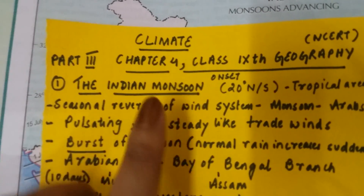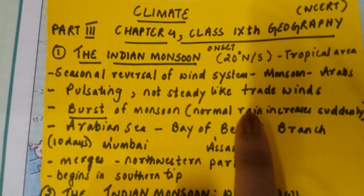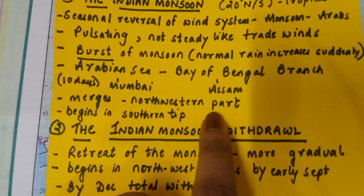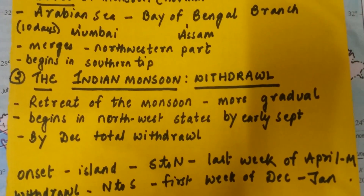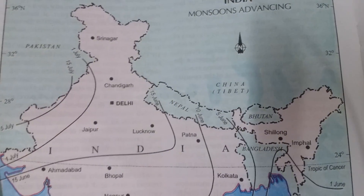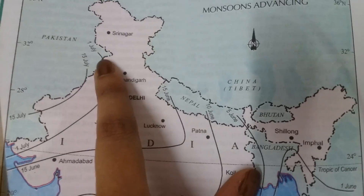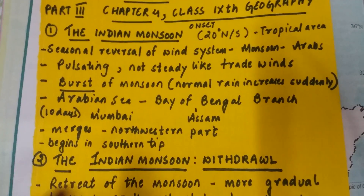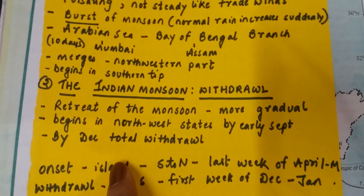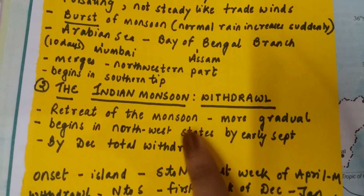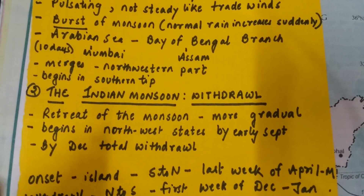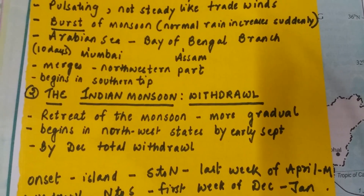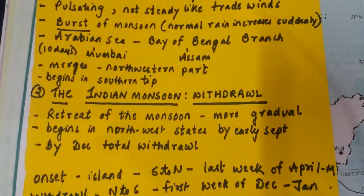So we covered what the Indian monsoon is, where it occurs, how it differs from the normal trade winds, and how it merges in the northwestern part. Now coming to the withdrawals. What we discussed is the entering of the monsoon, which is around the April–May time period. We should also know about the withdrawal, because this is not the natural wind — the wind system that entered the continent will also leave, so the normal northeastern trade winds would again prevail.